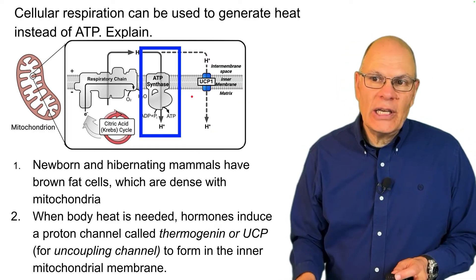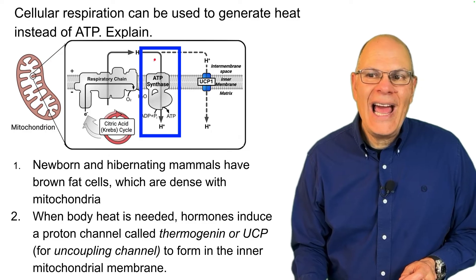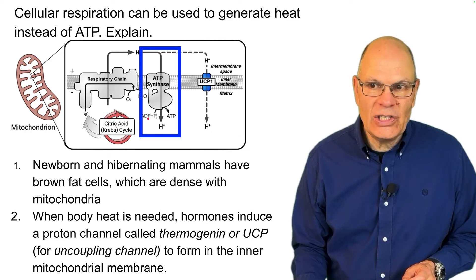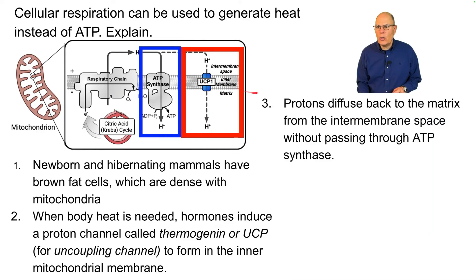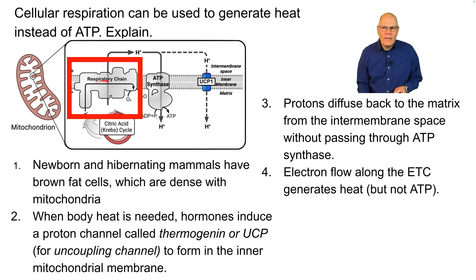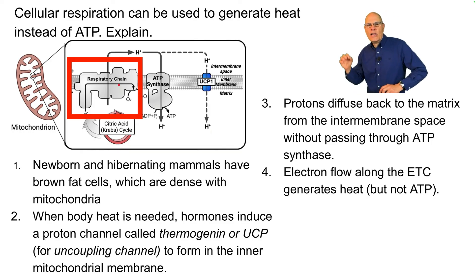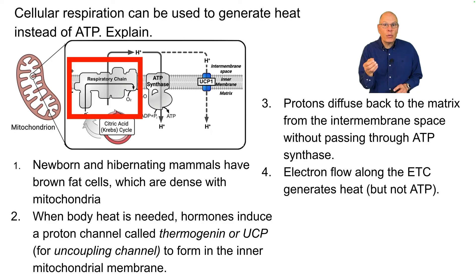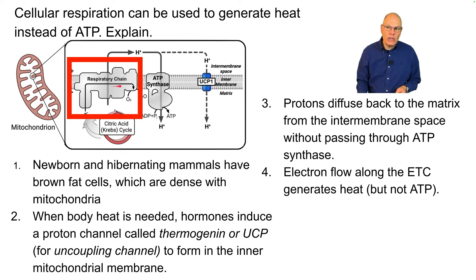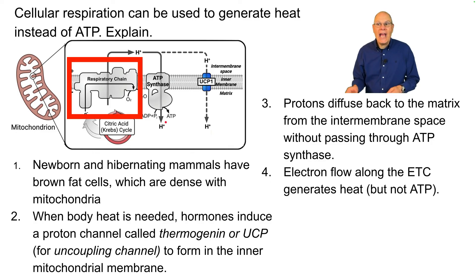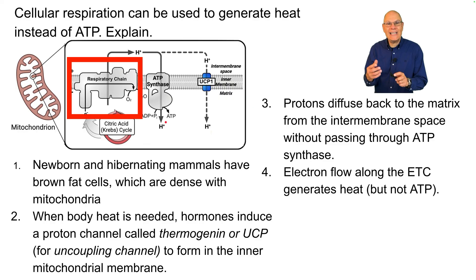In normal cellular respiration, trapped protons have to diffuse through ATP synthase, which creates ATP. But now there's an additional channel — the uncoupling channel — so protons diffuse back to the matrix from the intermembrane space without passing through ATP synthase. All of the activity in the electron transport chain, the respiratory chain, still has to happen. Think about the fact that when electrons move through a wire, they generate heat through resistance. You can think of the electron transport chain as a wire: the electrons moving through it generate heat, but in this case, heat without generating ATP. That's how cellular respiration can be used to generate heat instead of ATP.